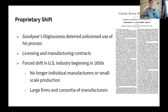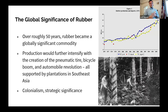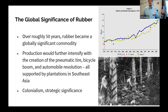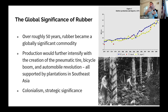We begin to see a number of other legal strategies deployed to mitigate risk. Over this time, the global significance of rubber climbs and climbs. The earliest numbers I could find were from 1870 forward, and much of this earlier manufacturing is based on the fact that rubber is waterproof and airtight. With the advent of the telegraph, the fact that it is electrically resistant becomes very appealing and interesting.